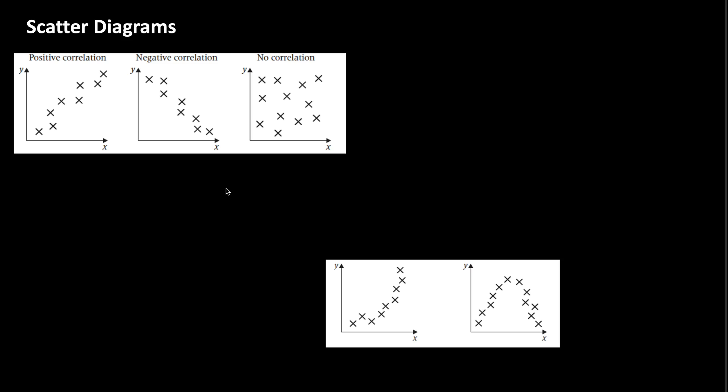In A-level statistics, you are expected to recognize non-linear correlations, such as these two shown below. If you remember from GCSE, one is an exponential graph while the other is a parabola. The reason we can't say it's a quadratic is because we do not know how x behaves beyond this point.